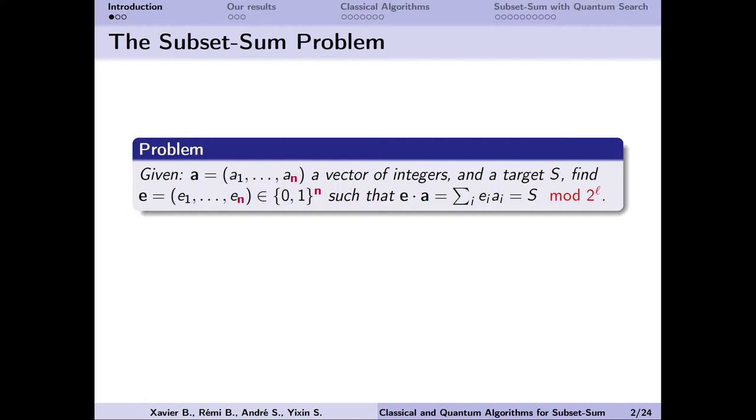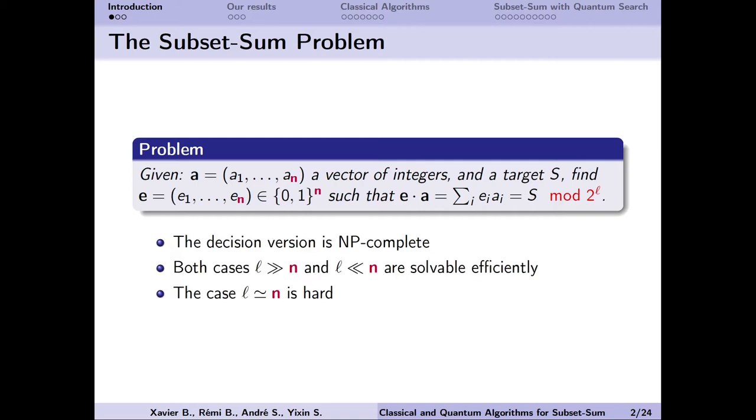More generally, we are interested in a modular version of the subset sum problem. The decision version of this problem is well known to be NP-complete, and there are three very different regimes, depending on the relationship between L and n. In this talk, we are interested in a case where L is roughly equal to n, because this is the hardest case. The other cases can be approached by different techniques and can be solved efficiently.